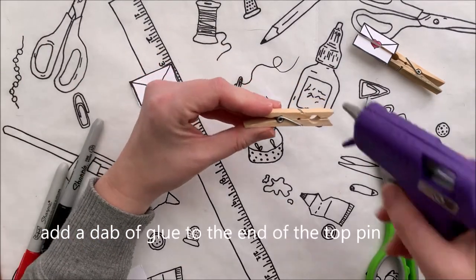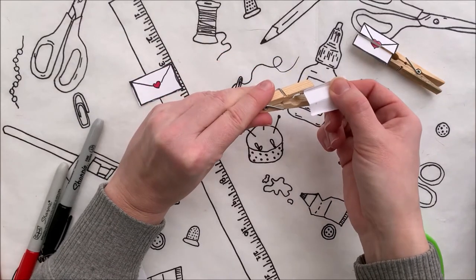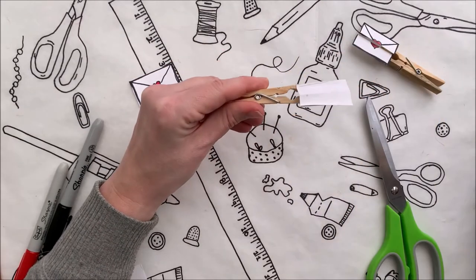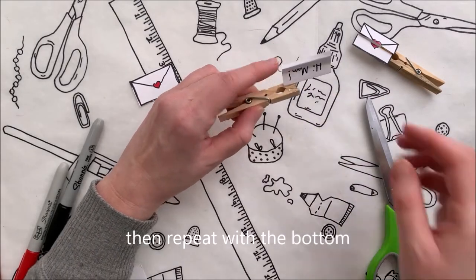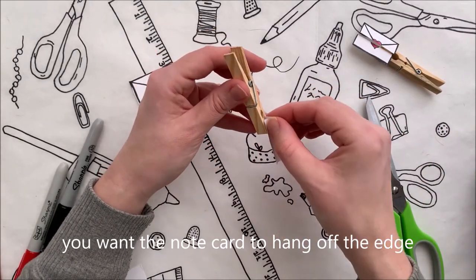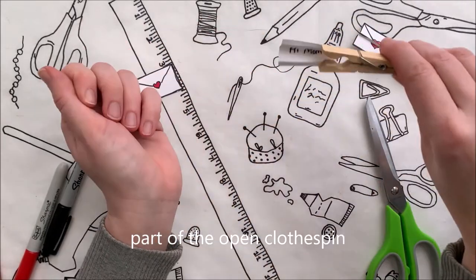Add a dab of glue to the end of the top pin and attach the top corner of the note. Then repeat with the bottom. You want the note card to hang off the edge so that the paper opens at the widest part of the open clothespin.